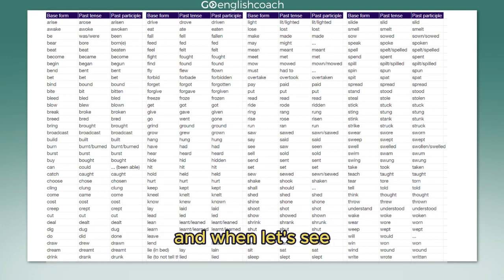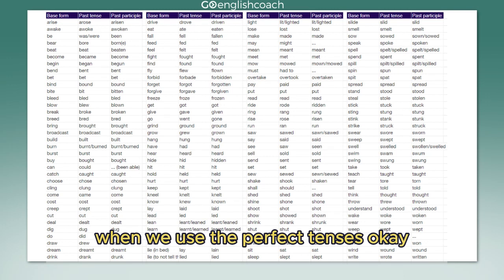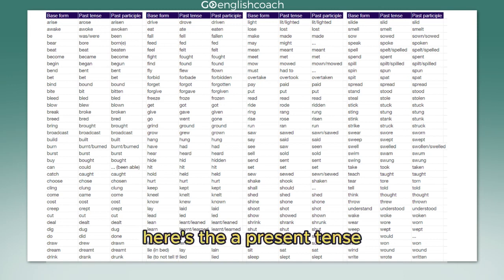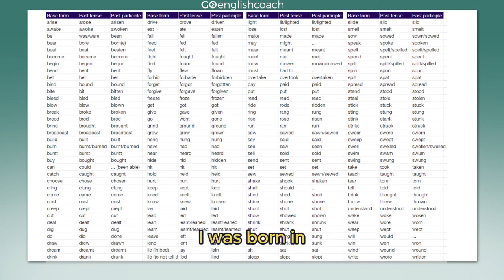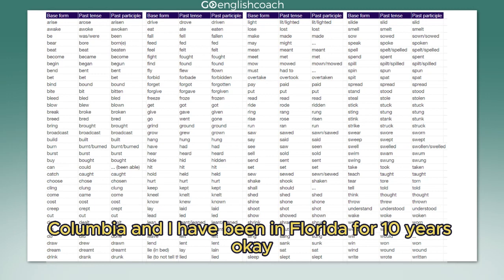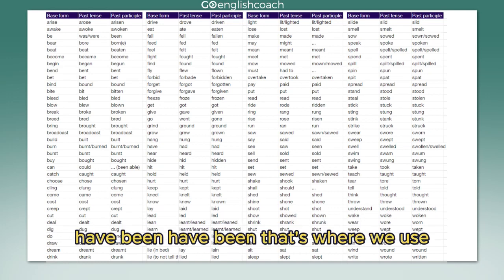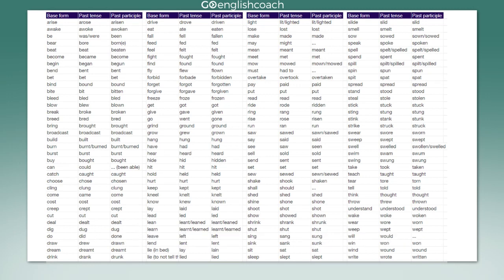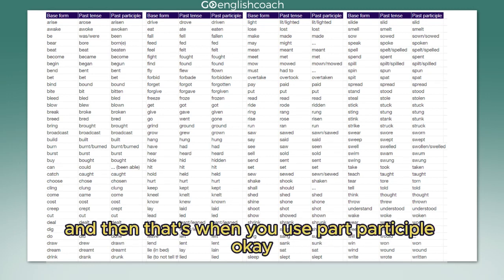When do we use the past participle? We use it in the perfect tenses. For example: 'I am from Colombia. I was born in Colombia, and I have been in Florida for ten years.' 'Have been' — that's the present perfect tense, and that's where you use the past participle.